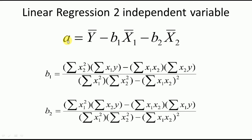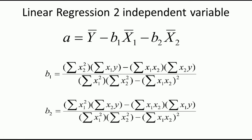To calculate the intercept a, we use the equation: a = ȳ − b1·x̄1 − b2·x̄2, where ȳ is the mean of y, x̄1 is the mean of x1, and x̄2 is the mean of x2. So to calculate the intercept we need the means of x1, x2, and y, along with the coefficients b1 and b2.